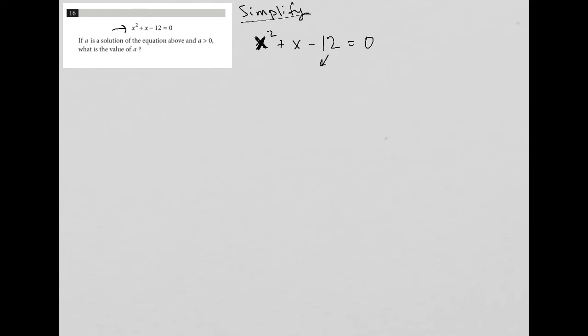So two numbers which multiply to equal negative 12, but add up to positive one. There's an invisible one here. This is how we factor trinomials. Those two numbers would be a positive 4 and a negative 3. 4 times negative 3 is negative 12, but 4 plus negative 3 is positive 1.